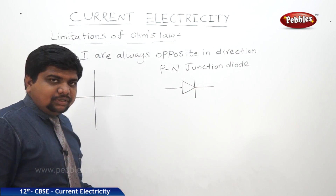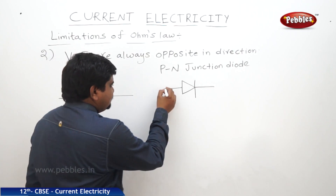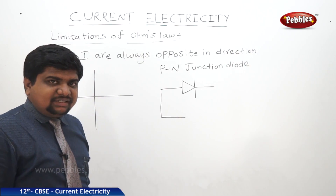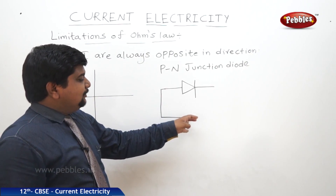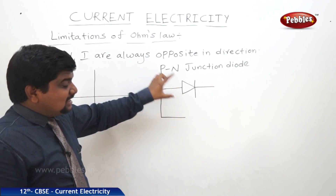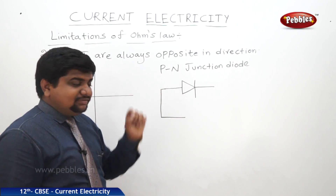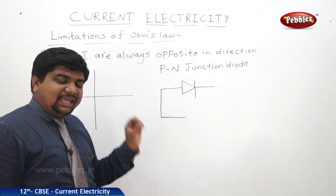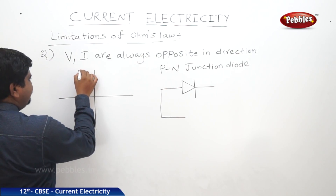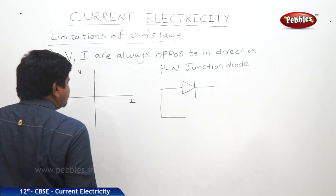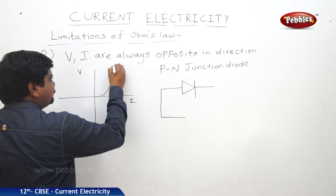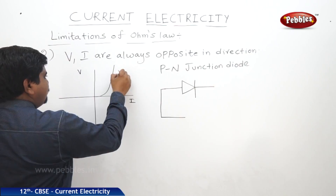The positive side of the junction diode connected to the positive terminal of the battery is forward bias. The negative terminal of the battery connected to the positive terminal of the diode is reverse bias. Connection between the same poles is forward bias; connection between unlike poles is reverse bias. In case of forward bias, if you plot the graph for V and I, it goes on increasing continuously.